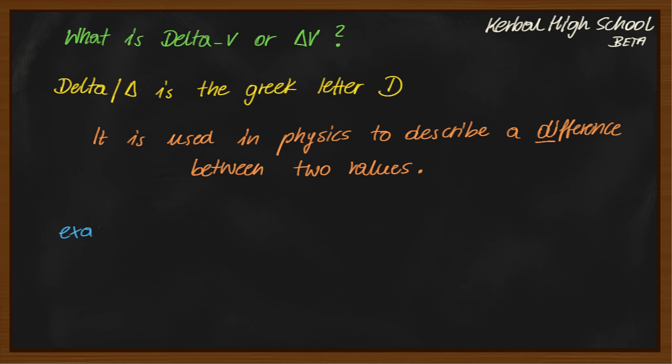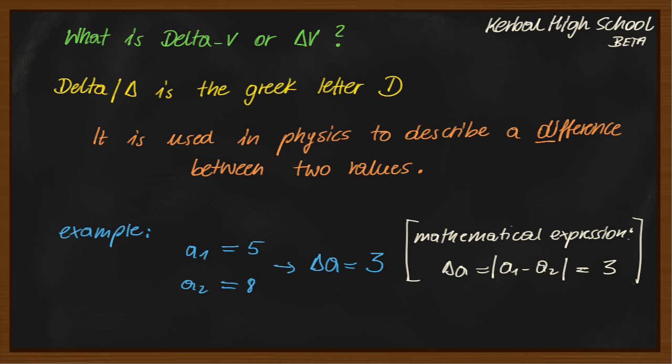For example, imagine a number a1 equals 5 and a number a2 equals 8. The difference between those two values is 3. We write it as delta a. The mathematical expression of this is delta a equals to the absolute value of a1 minus a2. The absolute value, however, is just the number without the sign.